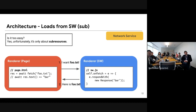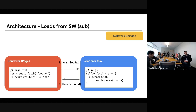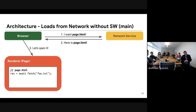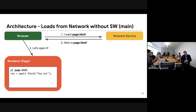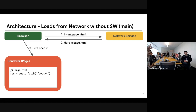That was only about sub-resources. For the navigation or main resource case, the request is initiated by the browser process. When you type a URL in the omnibox, for example, the browser starts the request. If you don't have any service worker, the request goes to the network service first from the browser process.